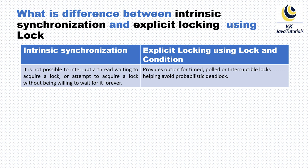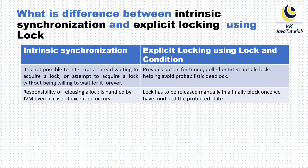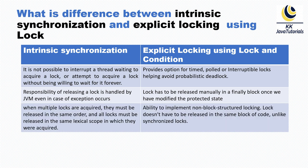The second difference: in intrinsic synchronization, the responsibility of releasing a lock is handled by the JVM, even if an exception occurs. When you use the synchronized keyword, it is the JVM's responsibility to release the lock. With explicit locking, however, the lock must be released manually in the finally block after modifying the critical section. You acquire the lock by calling the lock method and must release it with unlock in the finally block.